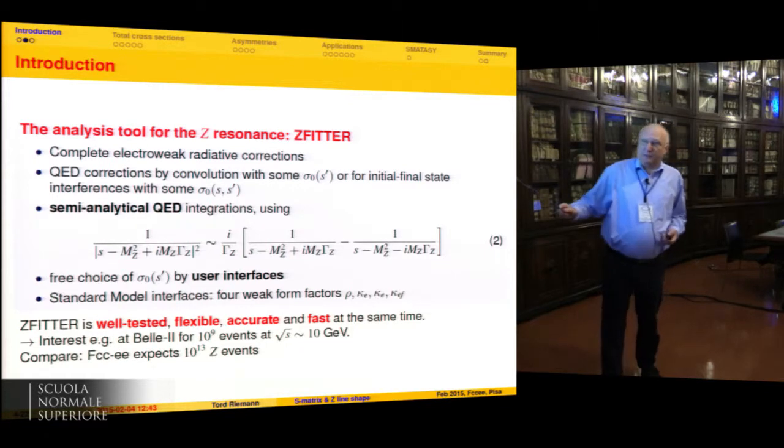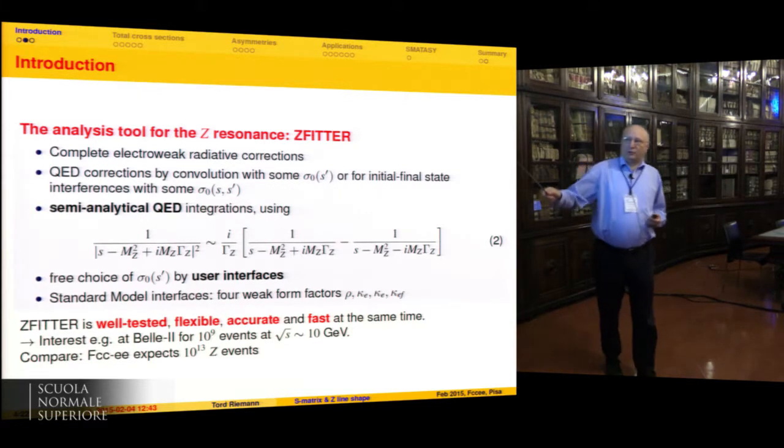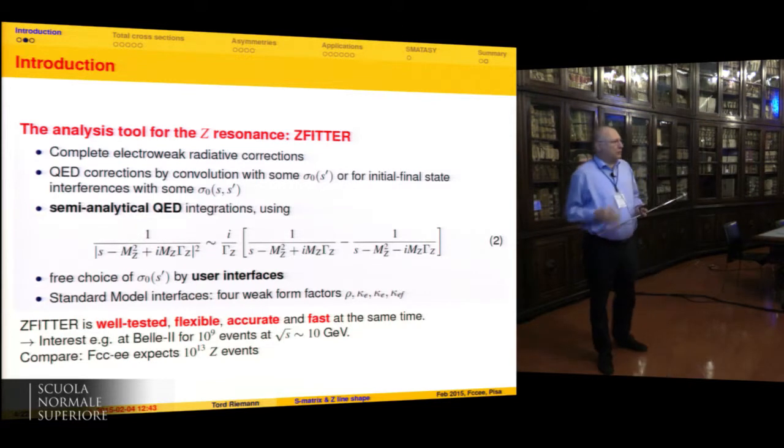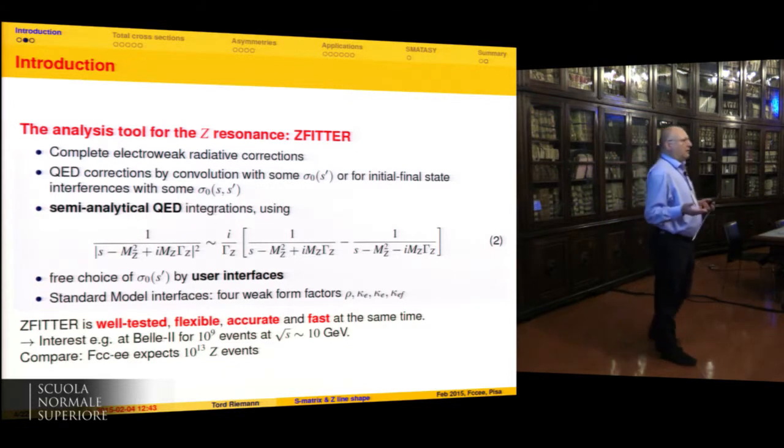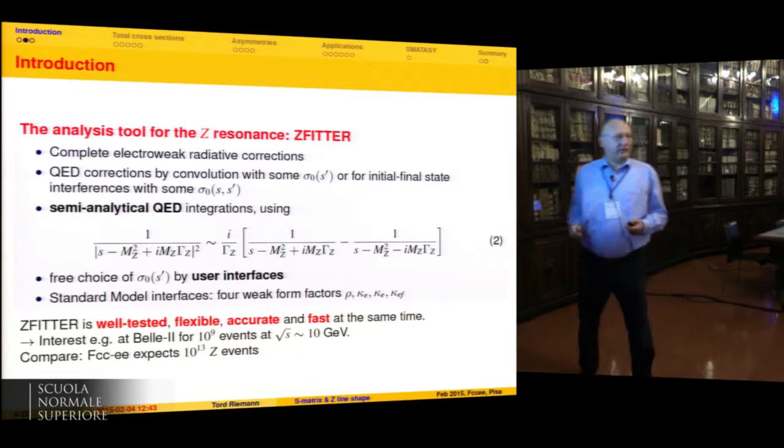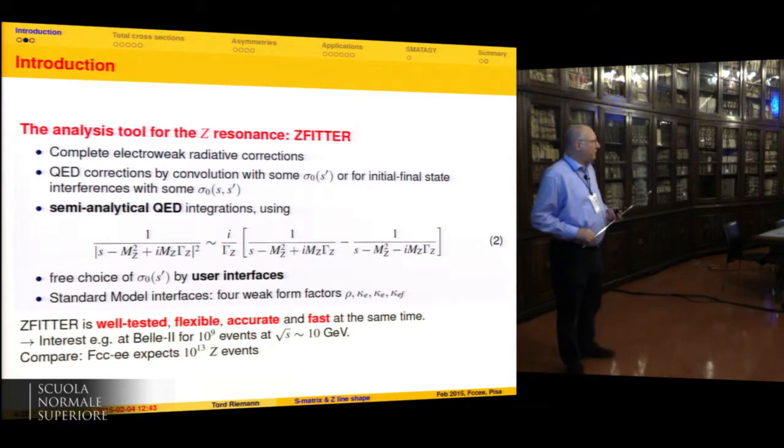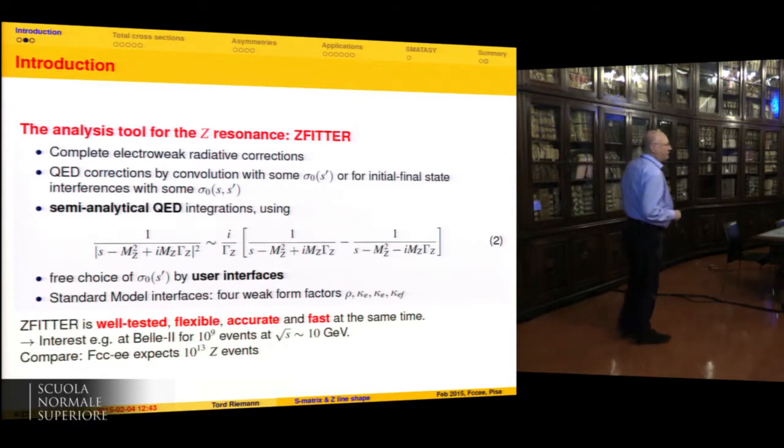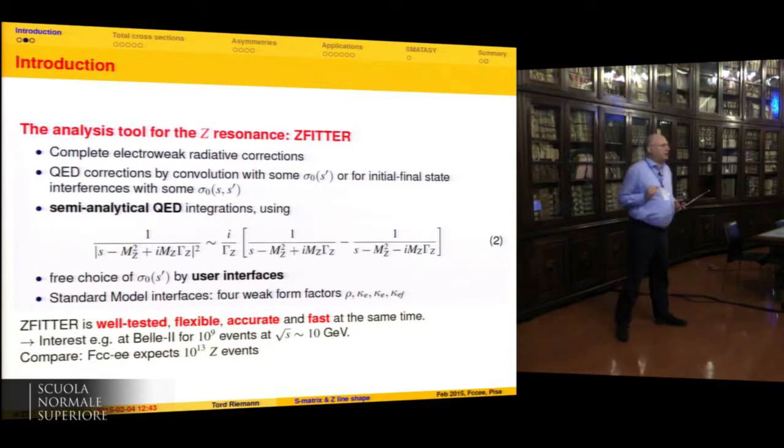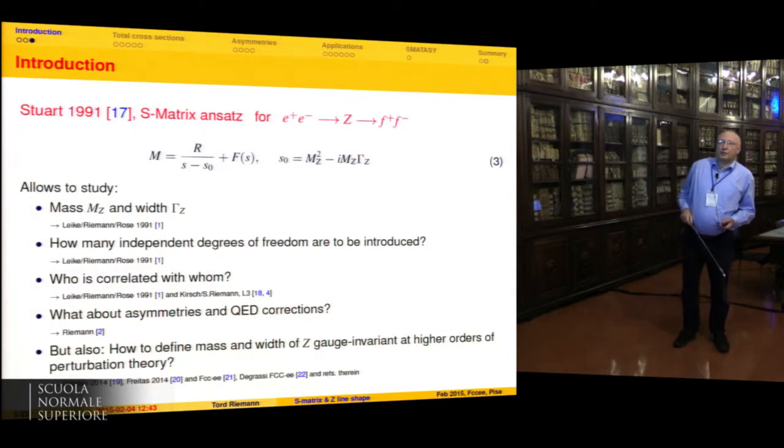So now let's have a look to the future. There's an interest at BESIII, for example, which will produce 10^9 muon pairs at about square root 10 GeV. They told me it is not so easy to analyze this data in whatever way with the normal Monte Carlo. So they intend to use the fitter even for physics at meson factories. And we will have in the FCC-EE about 10^13 Z events. Because the accuracy of the energy determination is so high, I guess what we can learn here is interesting.